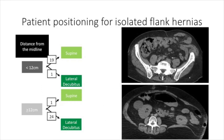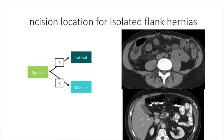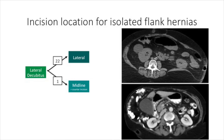For isolated flank defects, the patient position was related to the distance of the medial fascial edge from the midline. Isolated defects within 12 centimeters of the midline were usually accessible with the patient supine. However, those greater than or equal to 12 centimeters from the midline were nearly always repaired with the patient in lateral decubitus, because otherwise it would be extremely difficult to access the retroperitoneum and the lateral aspect of the repair. When patients were supine, the incision was made either over the defect or at the midline, and when patients were in lateral decubitus, the incision was nearly always located laterally to provide optimal access to the retroperitoneum.